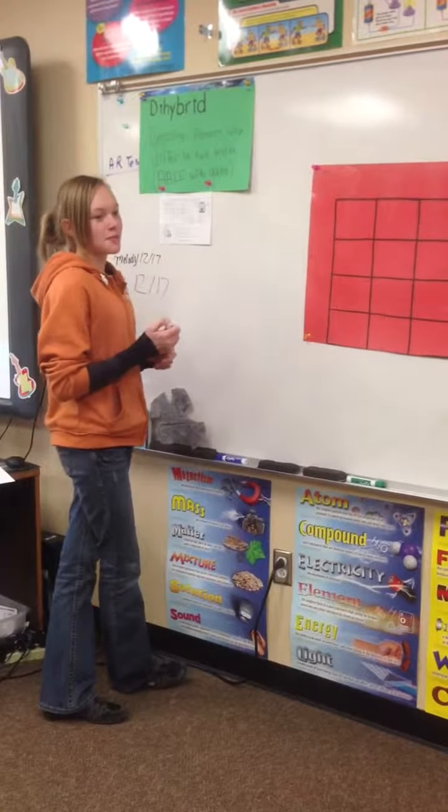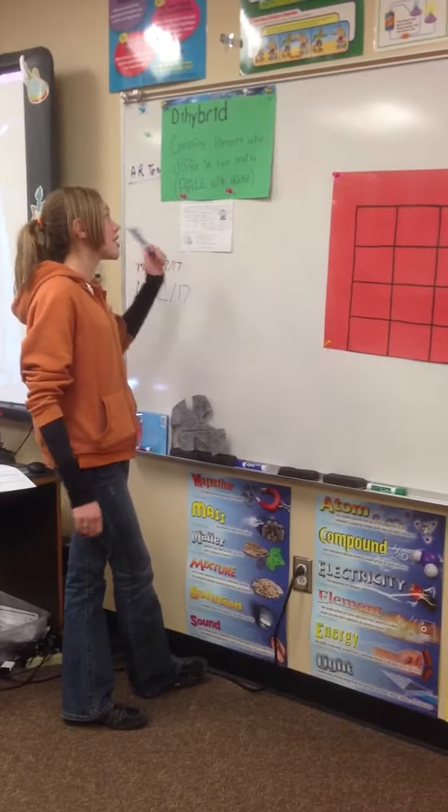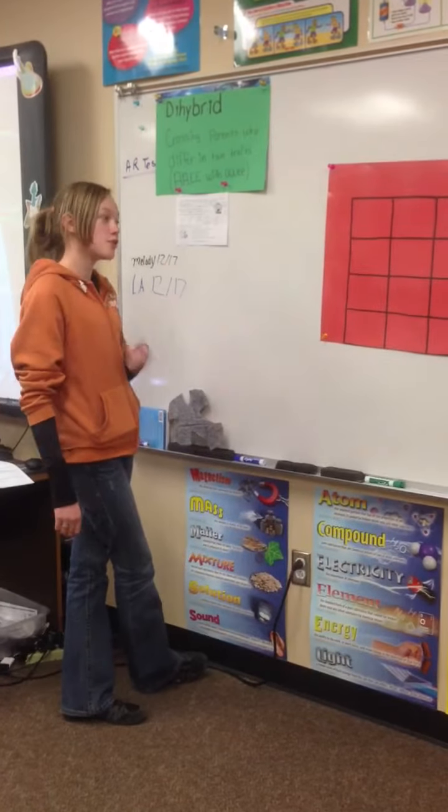Last time I talked about a monohybrid Punnett square. Today I'm going to talk about a dihybrid Punnett square, which is crossing parents who differ on two traits.